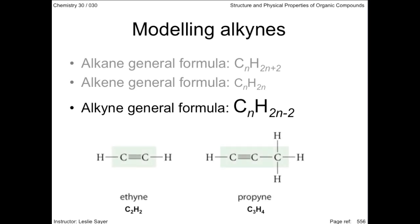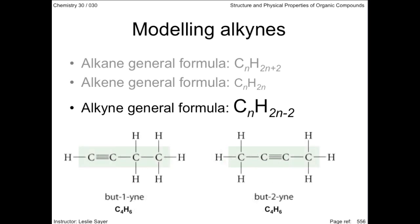Like similarly sized alkenes, ethyne and propyne have only one position for their multiple bond. And like alkenes, compounds larger than a 3-carbon chain form structural isomers.